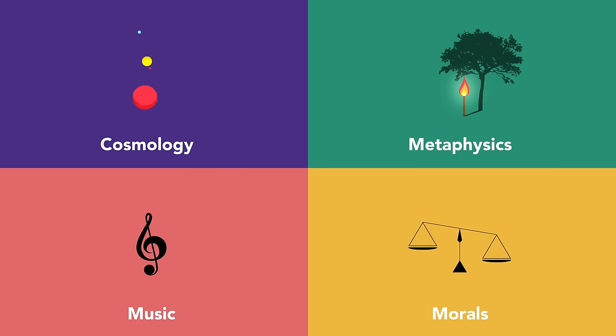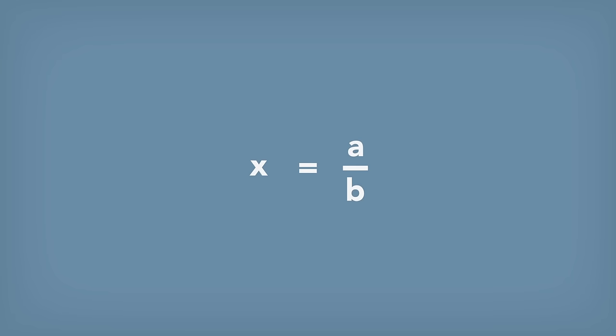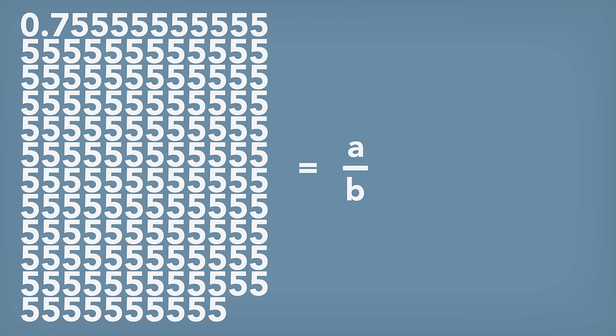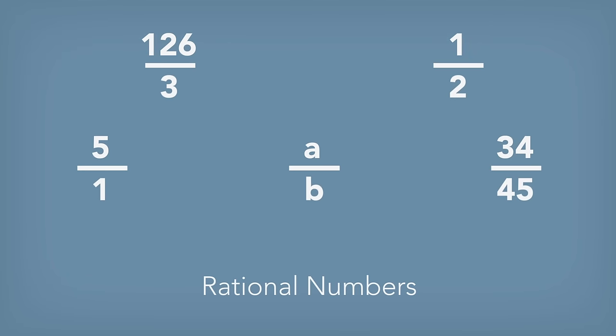Thus, any number could be written as such a ratio: 5 as 5 over 1, 0.5 as 1 over 2, and so on. Even an infinitely extending decimal like this could be expressed exactly as 34 over 45. All of these are what we now call rational numbers.